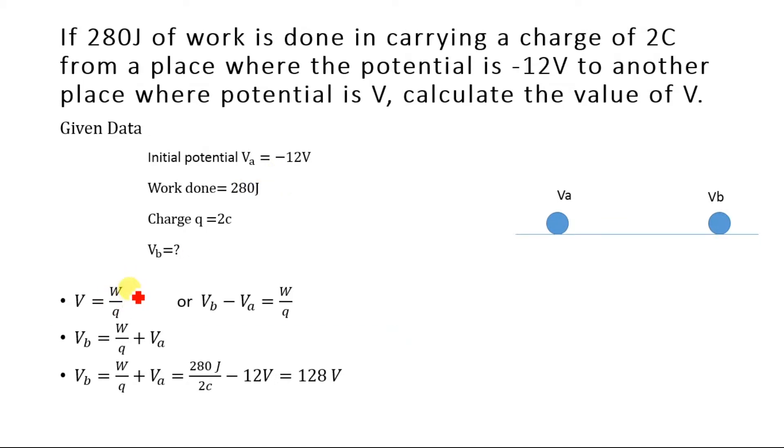We will use the definition of potential. We know that the potential is the work done per unit charge, or W divided by q. But here we will determine the potential at another location, and we are bringing the charge from one location to another location. So we will use the term potential difference. The potential difference is the change in the potential which is equal to the work done per unit charge.